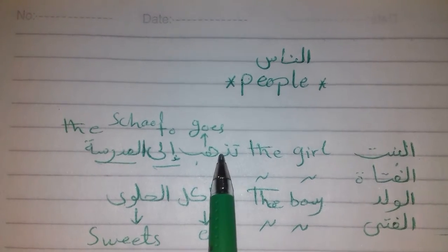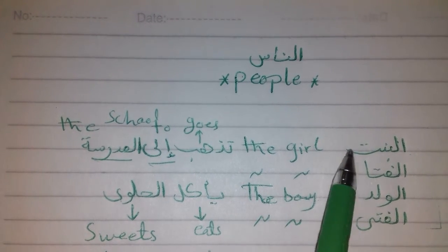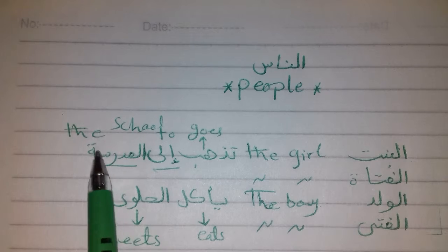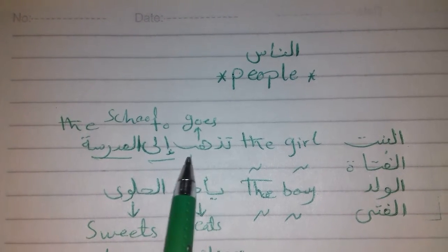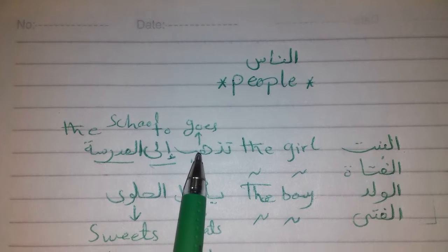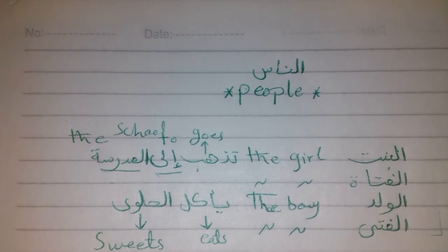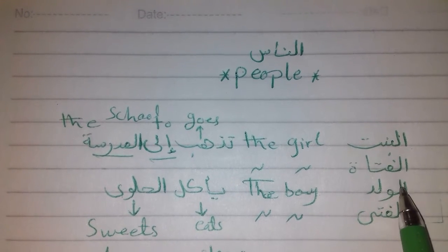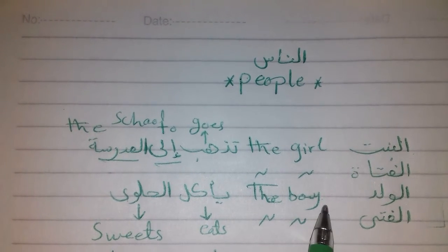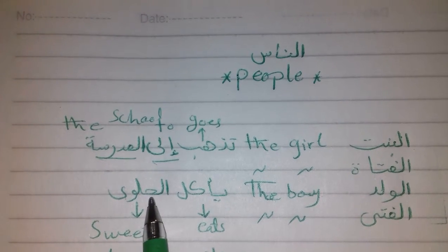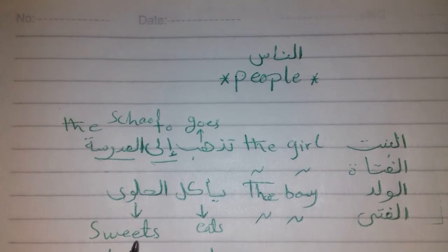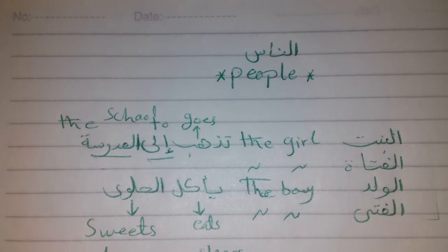If you don't know yet how to conjugate the verb in Arabic, I've already made a video about conjugation of verbs in Arabic and I'll put the link down in the description box. So here we have الولد or الفتى, and both mean 'the boy.' Example: الولد يأكل الحلوى — يأكل means 'eats,' الحلوى means 'sweets.' Or: الفتى يأكل الحلوى.